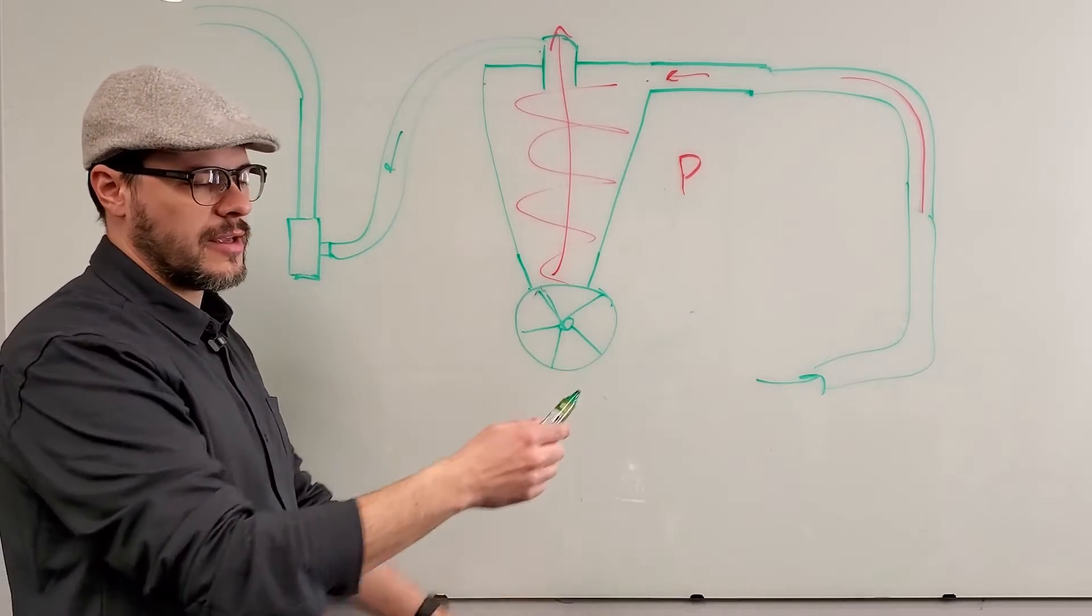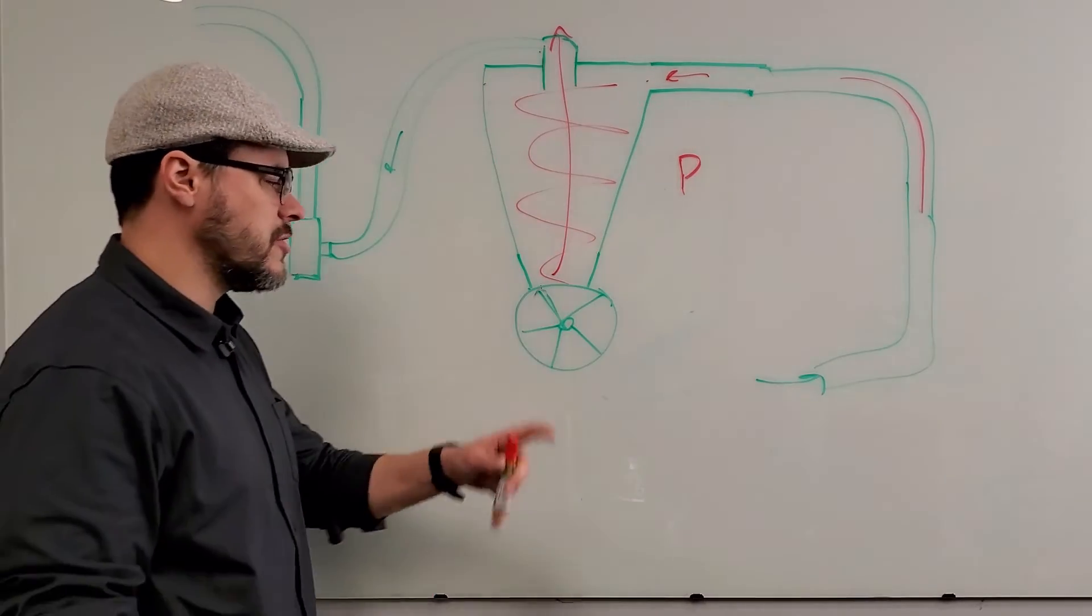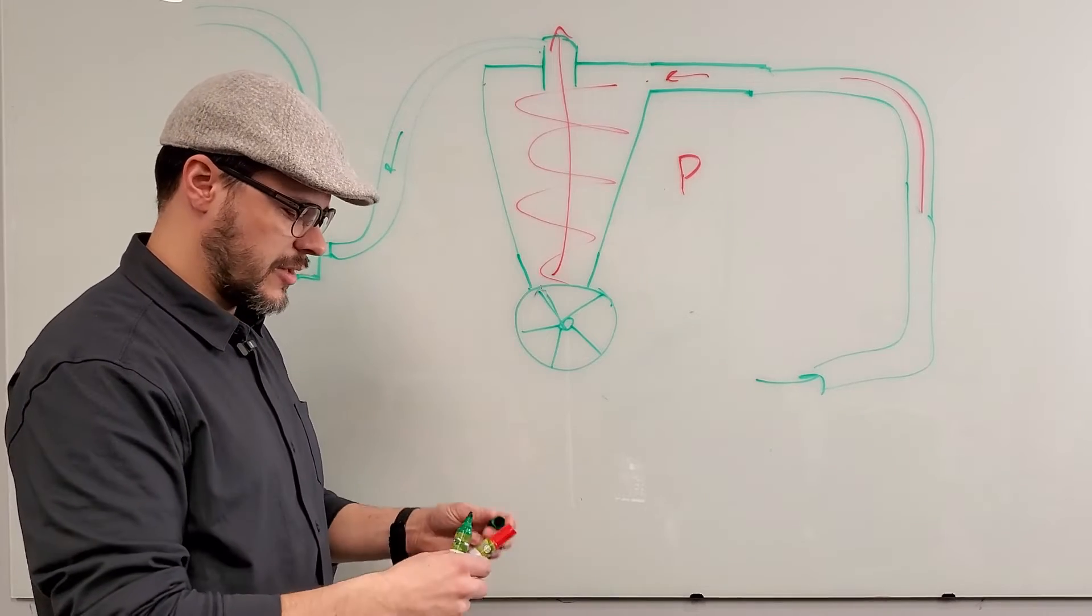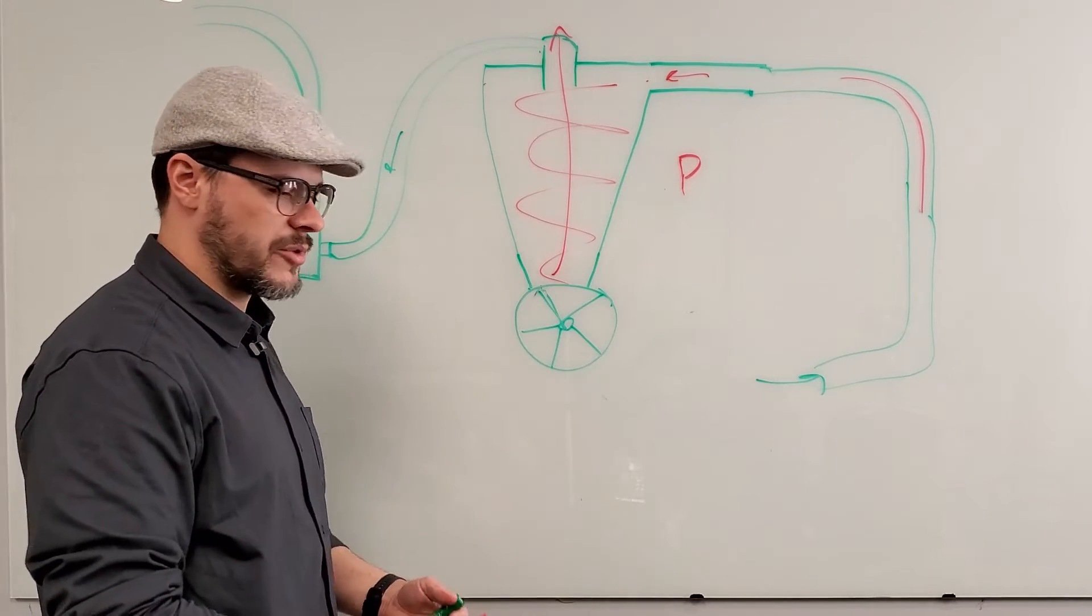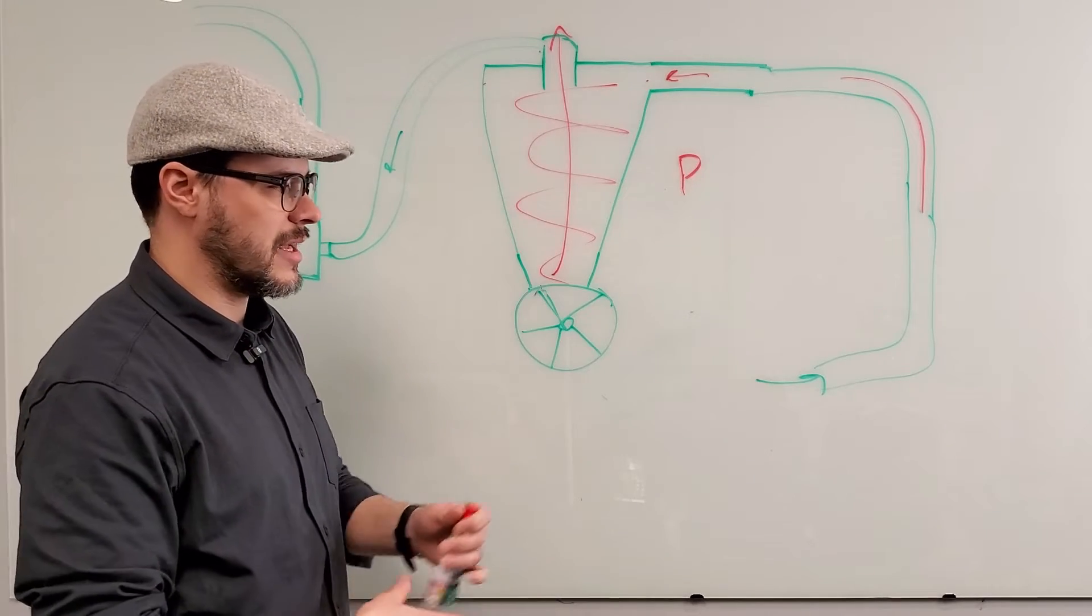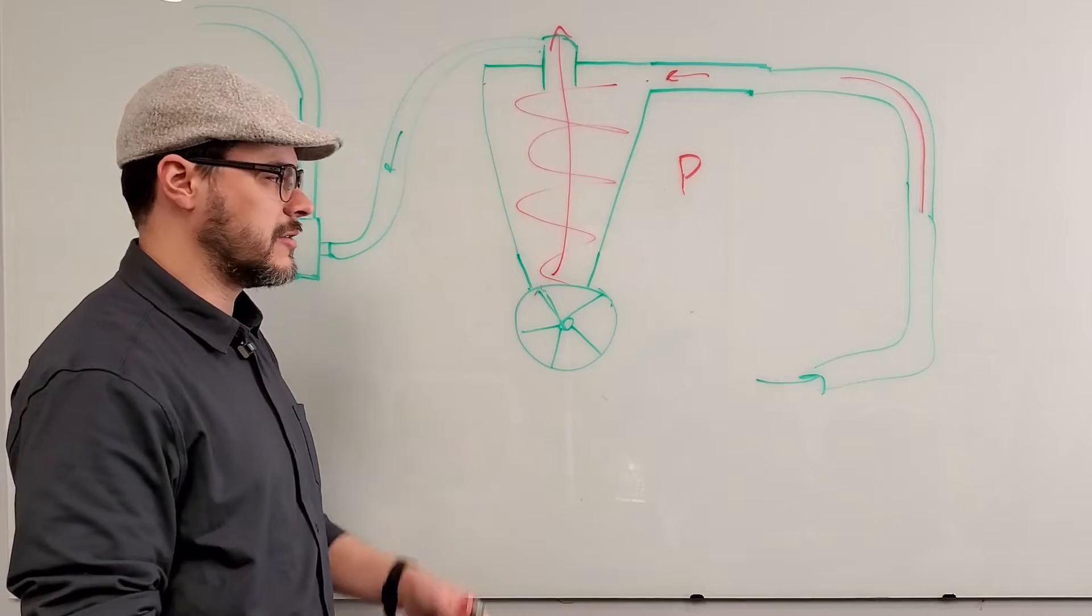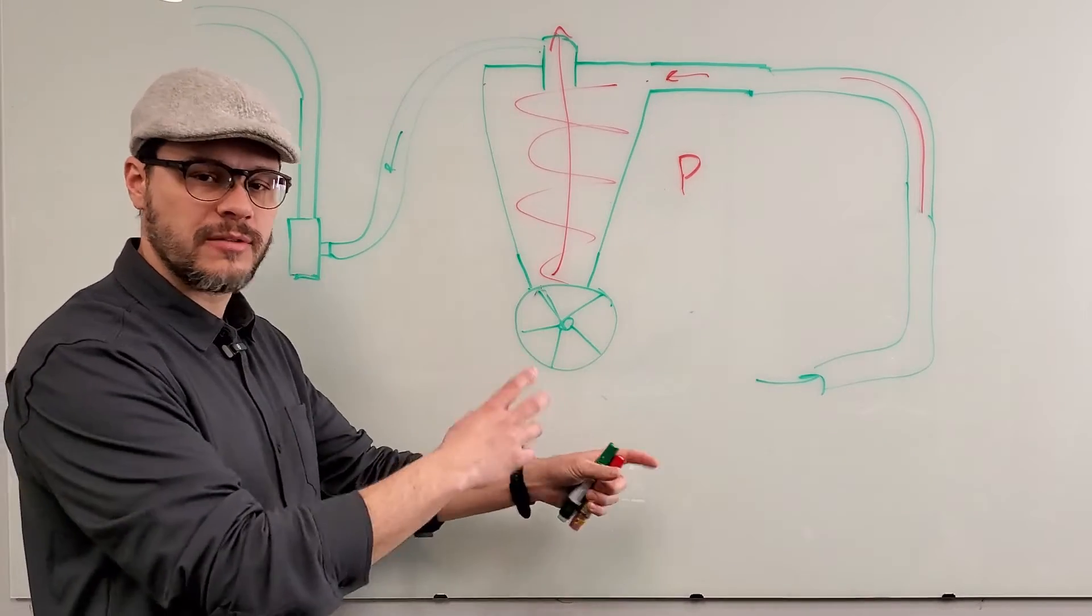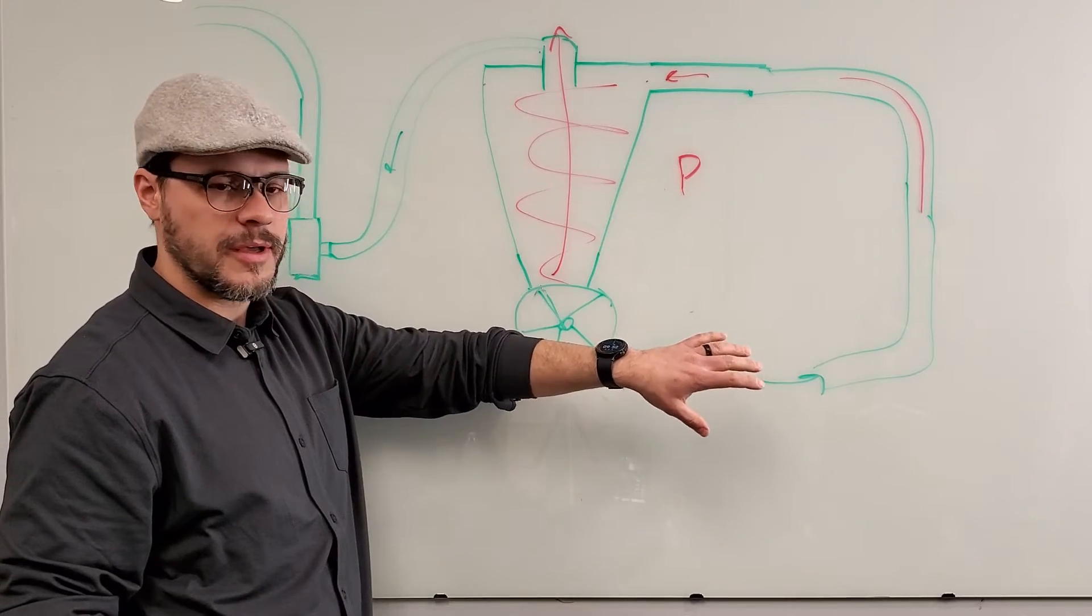The other thing is you're not running material through your blower. When you're running material through your blower, you could have... aluminum is really a good example of this. Aluminum, a lot of people don't realize, is extremely abrasive. I had a customer that was running aluminum copper radiators, one of the very first machines we installed to do aluminum copper radiators.